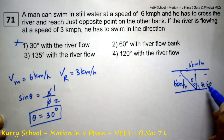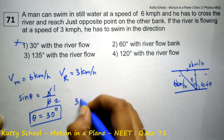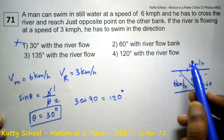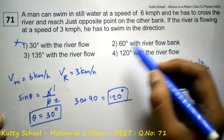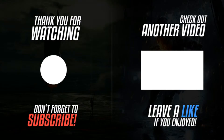So the required angle is 90 plus theta — that is 90 plus 30 degrees, which equals 120 degrees with the river flow. So he must swim at 120 degrees with the river flow. Thank you.